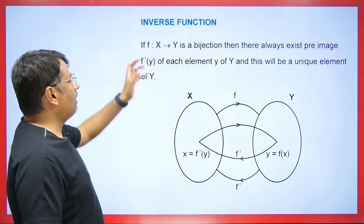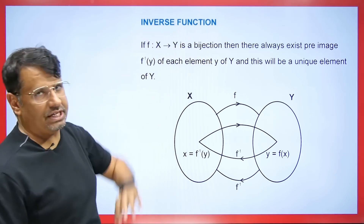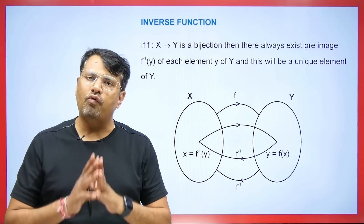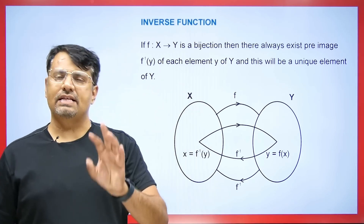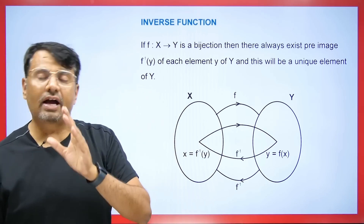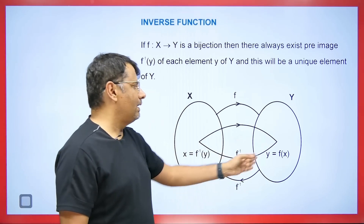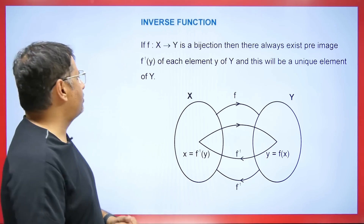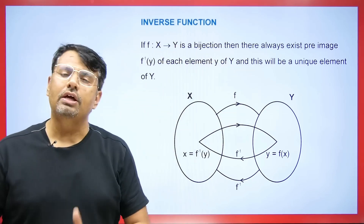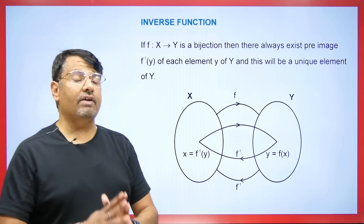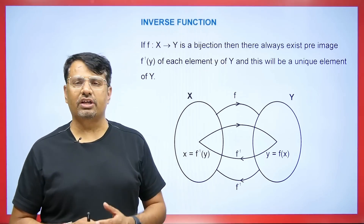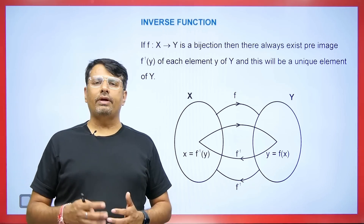First, we will talk about the inverse function. If F: X → Y is a bijection — meaning if any function defined from X to Y is both one-to-one and onto — then its inverse will always exist. In other words, its pre-image will always exist, and that pre-image is always a unique element.